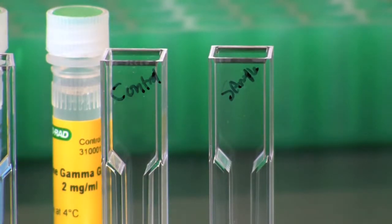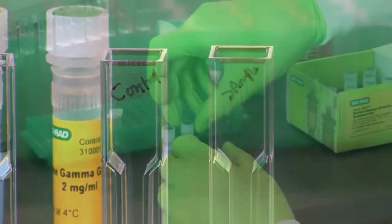Pipette 20 microliters of diluted milk sample into the cuvette labeled sample and 20 microliters of 1x PBS into the cuvette labeled control.